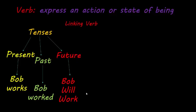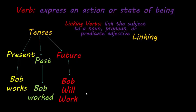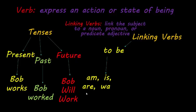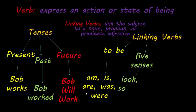Next, we're going to discuss linking verbs. A linking verb links a subject to a noun, a pronoun, or a predicate adjective. First, we have 'to be' — forms include am, is, are, was, and were. For example, 'John is excited about school' — is links John to being excited about school. We can also use the five senses as linking verbs: look, sound, smell, feel, and taste. For example, 'I feel sleepy' — feel is the linking verb.